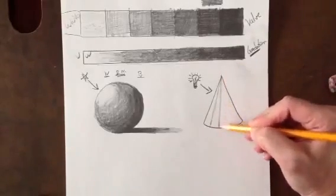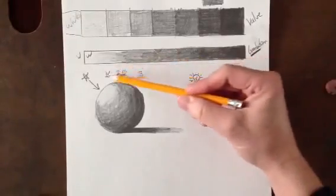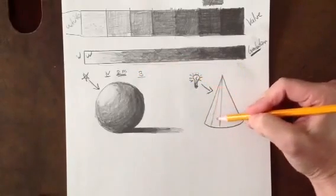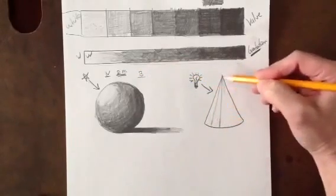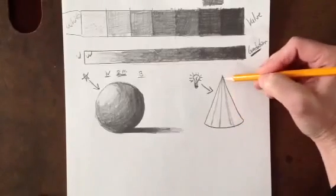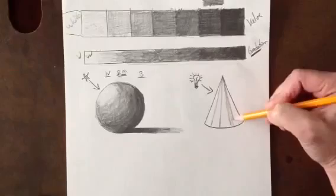And again, remember we want at least four different colors or four different values. We want a white, two mediums, and a black. So there's your white, here's your light medium, there's your dark medium, and here's your black. Notice that the top is much skinnier, and then as you come down, it gets wider.